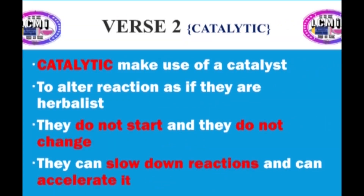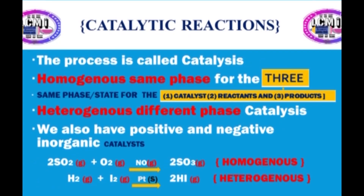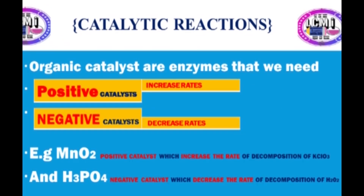Catalytic reactions make use of a catalyst to alter reaction rate. They are not consumed, they do not change; they can slow reactions and can accelerate — the process is called catalysis. Homogeneous: same phase. Heterogeneous: different phase. We also have positive and negative catalysts. Inorganic and organic catalysts — organic catalysts are enzymes. Positive catalysts increase rates; negative catalysts decrease rates. MnO₂ is an example.